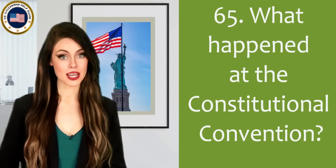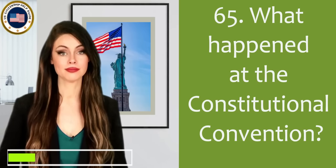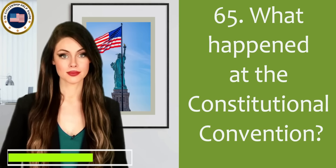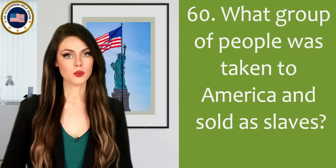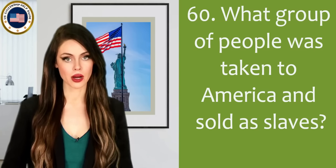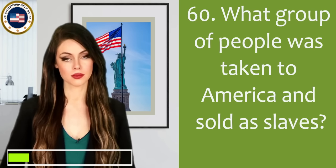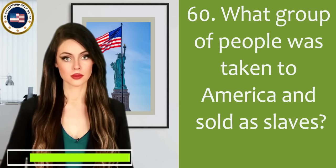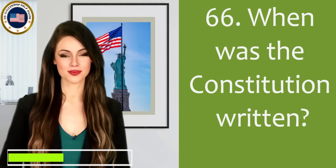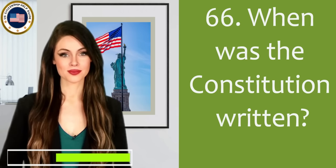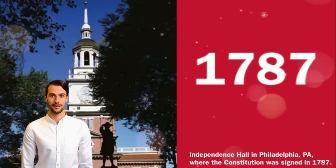What happened at the Constitutional Convention? The Constitution was written. What group of people was taken into America and sold as slaves? Africans. When was the Constitution written? 1787.